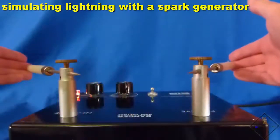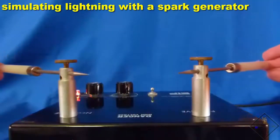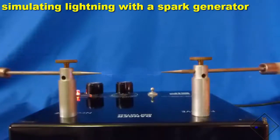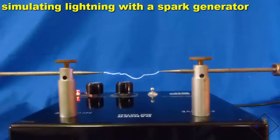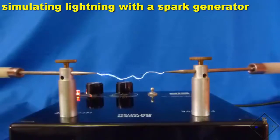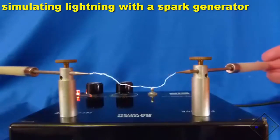Notice how as the distance between the posts gets smaller, the sparks become more frequent. Not as much charge is necessary to be built up to generate short sparks. But as the gap increases, the sparks become less frequent because more charge is needed to be built up in order to overcome the insulating properties of air.